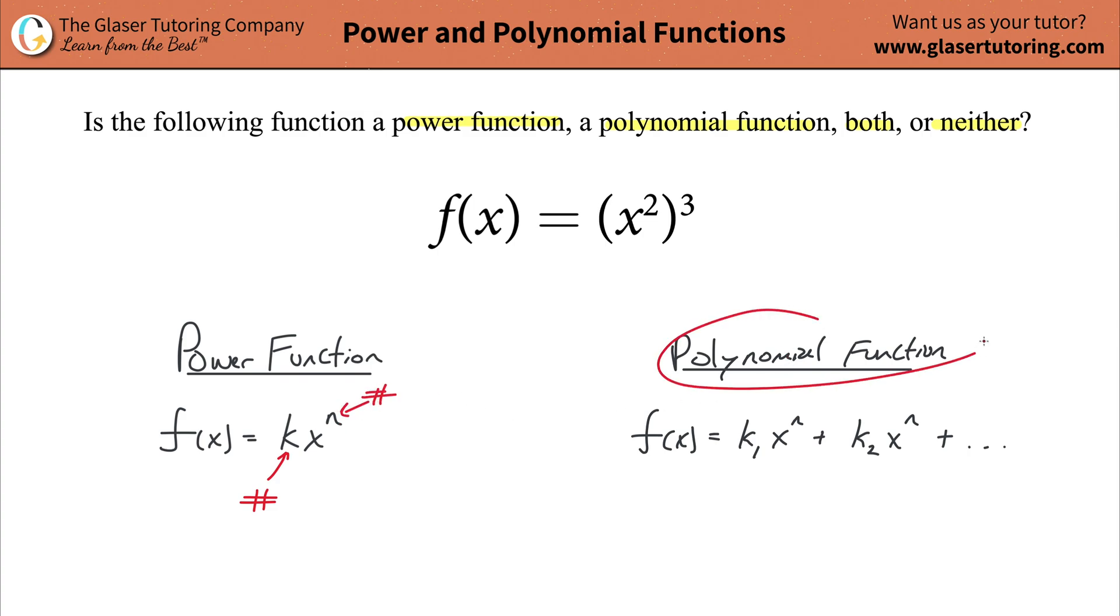A polynomial function is going to be very similar to a power function. It's a function that is equal to any number of terms, almost like single power functions added together. This k₁ represents some number, some constant or coefficient, multiplied then by a variable x raised to some other number, some power here which is a number.